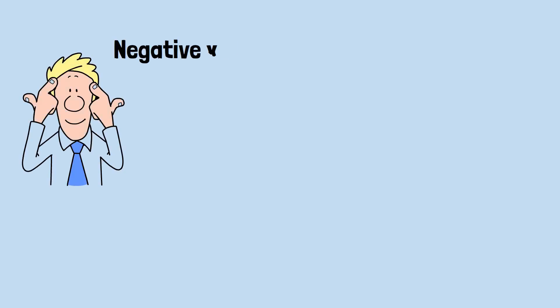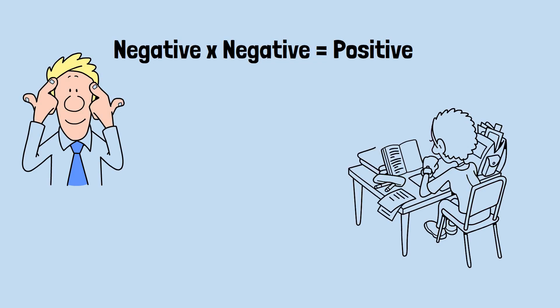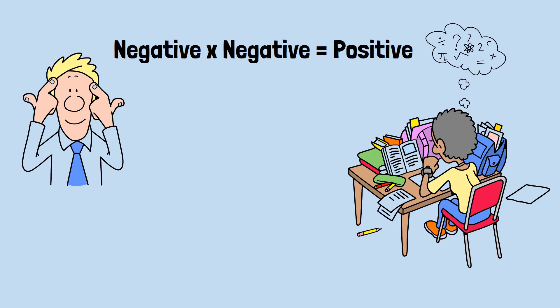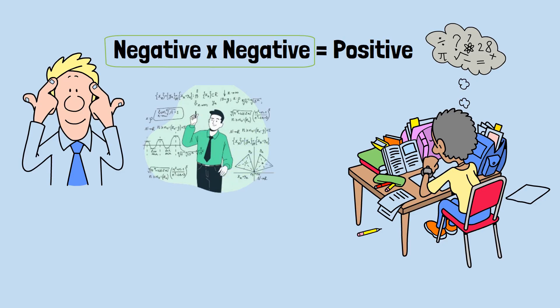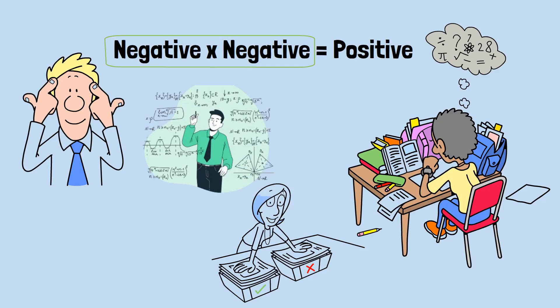Understanding why negative times negative equals positive isn't just about memorizing a rule. It's about expanding your cognitive toolkit to handle abstract mathematical concepts. The weird math of negative times negative isn't really weird at all. It's the natural consequence of mathematical consistency and logical reasoning. What seems counterintuitive at first becomes inevitable once we understand the underlying patterns and principles.